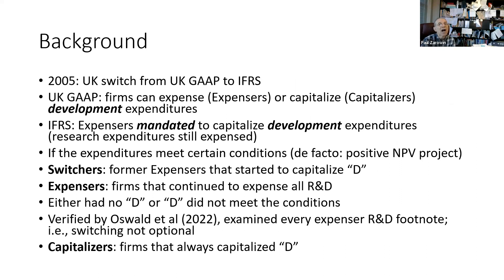So what's the background here? In 2005, the UK switched from UK GAAP to IFRS. Under UK GAAP, firms had the option of expensing or capitalizing — notice I emphasize the word development expenditures. Under all regimes, the research must be expensed. Under UK GAAP, companies had a choice of capitalizing or expensing the D, assuming it met certain conditions. But now under IFRS, they were mandated to capitalize the D that met those conditions. So that was a big change.